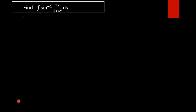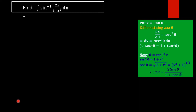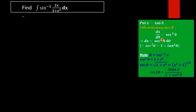To find the value of this integral, first consider the substitution x = tan θ. Differentiating with respect to x, we get dx/dθ = sec²θ, so dx = sec²θ dθ. We will now substitute these values and check whether the function is in an integrable form.